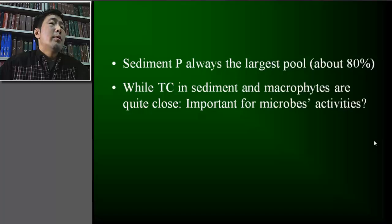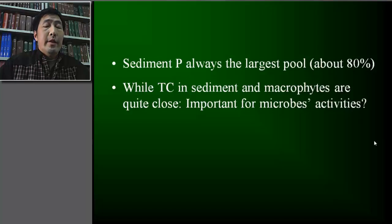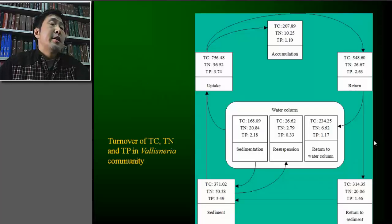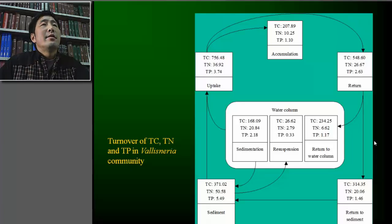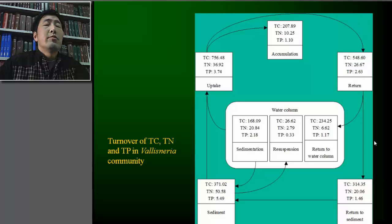Phosphorus in the water column represents a very small proportion. However, when we look at total carbon in the sediment and in the macrophytes, they seem quite close. Because of the importance of total carbon in microbial activities, total carbon may be an important resource for microbial activities. This slide shows the turnover of total carbon, total nitrogen, and total phosphorus in the Vallisneria community. In the growing season, Vallisneria mobilized most of its total phosphorus from the sediment, with very little directly from the water column. During the decaying season, much of the phosphorus was released to the environment, and much returned to the surface sediment.